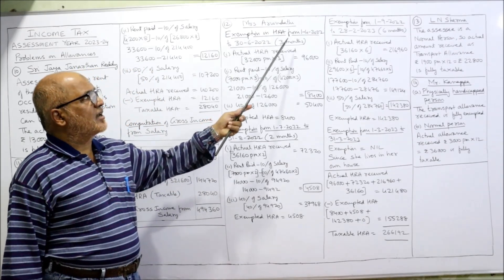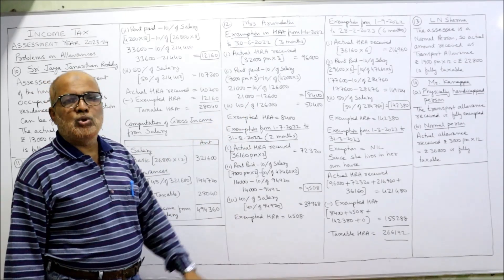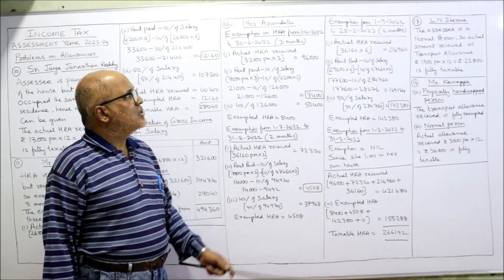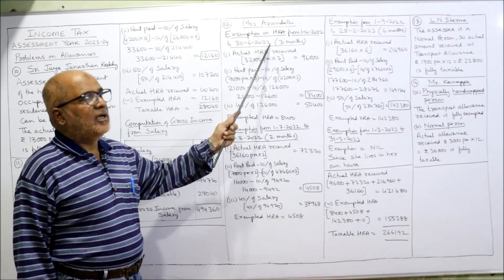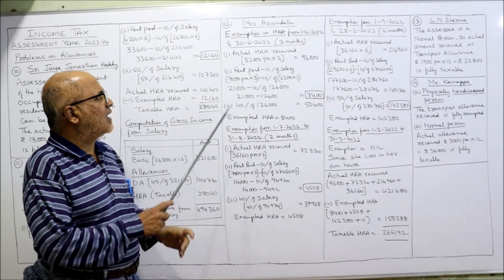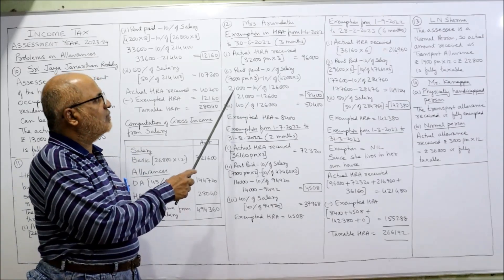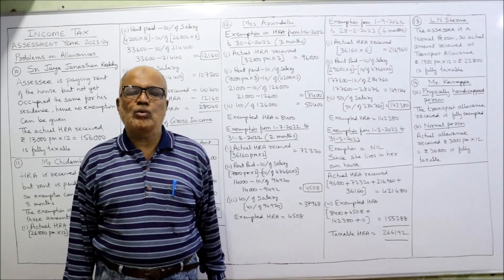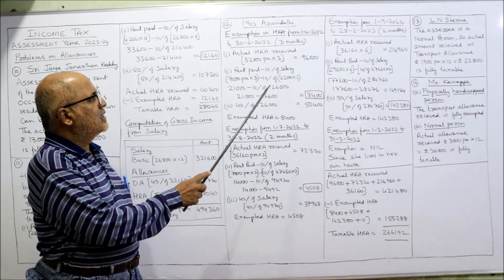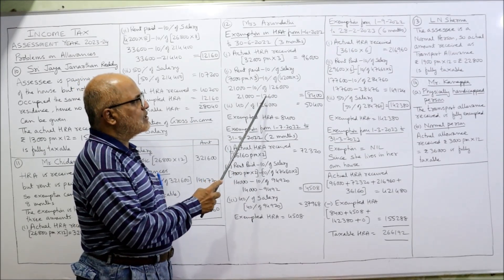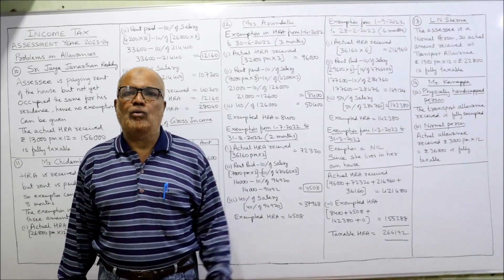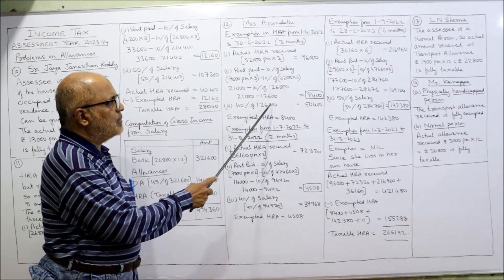Period 1: 1st April to 30th June — three months. Actual HRA received: ₹32,000 × 3 = ₹96,000. Rent paid minus 10% of salary: ₹7,000 × 3 = ₹21,000; 10% of basic ₹42,000 × 3 = ₹1,26,000 × 10% = ₹12,600; so ₹21,000 − ₹12,600 = ₹8,400. Third: 40% of salary because the assessee is living in Indore (other town): 40% of ₹1,26,000 = ₹50,400. Least among the three — ₹96,000, ₹8,400, ₹50,400 — is ₹8,400. That is the exempted HRA for the first three months.